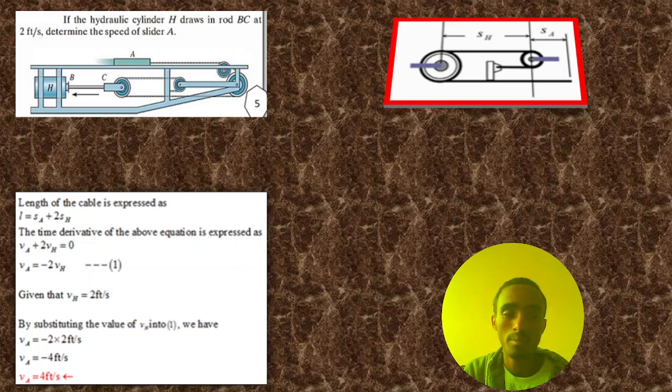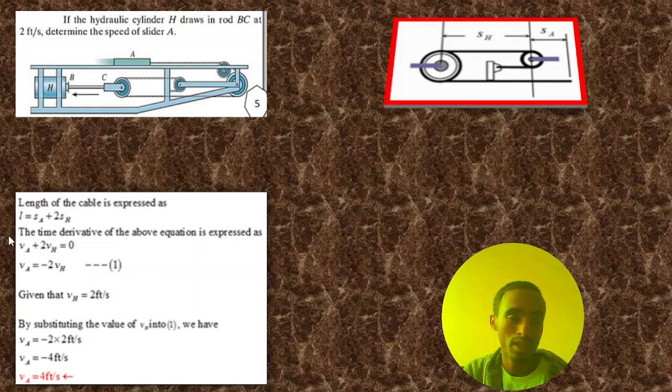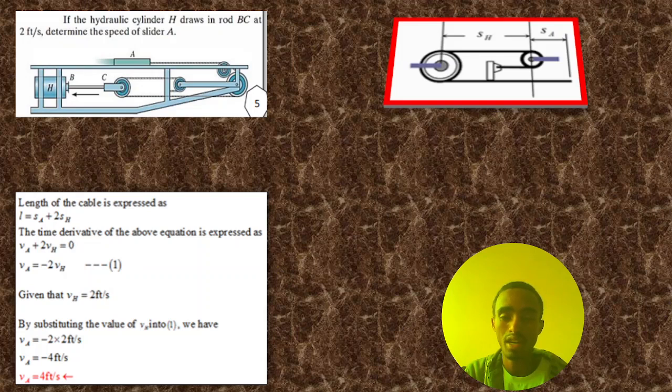Then the time derivative of the above equation is expressed as the acceleration or the velocity of vector. In this chapter of dynamics, the time derivative of vector is a very important concept. In order to understand this concept properly, we must be careful while calculating different things when using the concept of the time derivative of vector. Each vector may be acceleration, position, velocity, or others.